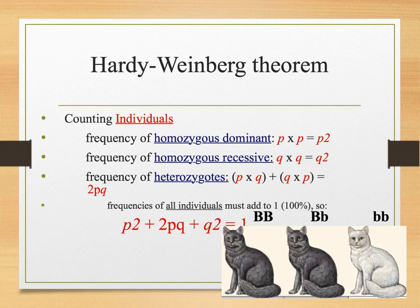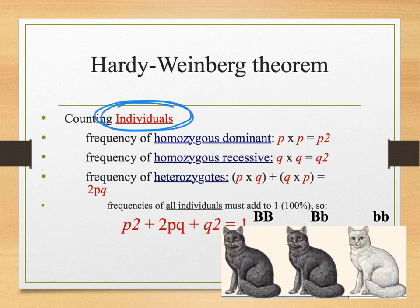Now let's look at actual individuals. The alleles tell us the genotype, but we'd need genetic testing to know that. So sometimes we look at what they actually look like. We'll look at how many homozygous dominant kitty cats there are — think of it like B times B, or B squared.